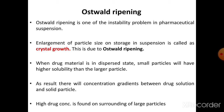Briefly, the Ostwald ripening concept occurs when the drug material is in a dispersed state. Small particles will have higher solubility than large particles. Basically, smaller particle size results in higher solubility — if particle size is less, solubility will be higher.